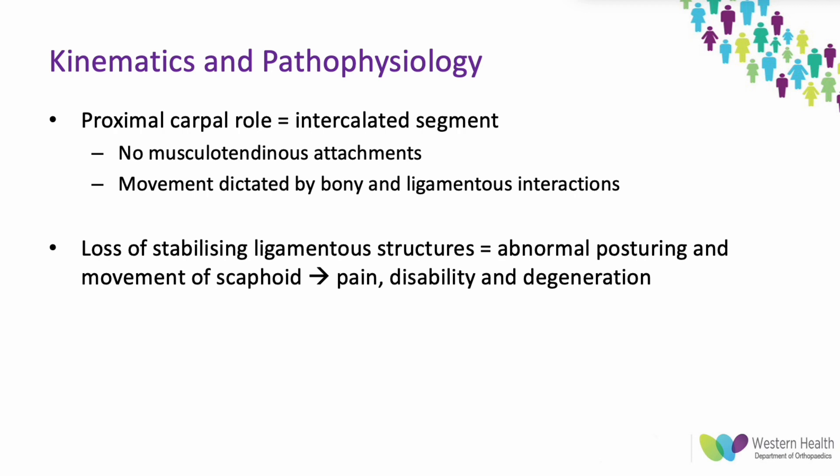When there's disruption of one of these ligaments, the balance is lost and the lunate is dominated by the remaining intercarpal relationship. When you lose the scapholunate ligament, you get abnormal posturing and movement of the scaphoid, which can lead to pain, disability, and degeneration.